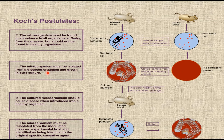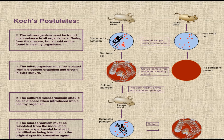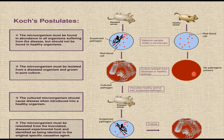The second postulate states that the microorganism must be isolated from the diseased organism and grown in pure culture. The pathogen should be isolated from the diseased animal and grown in pure culture, but should not be isolated from the healthy animal.